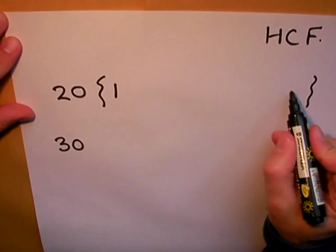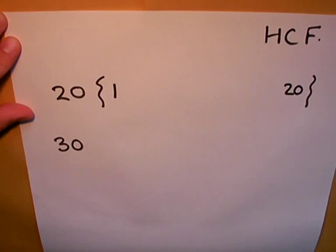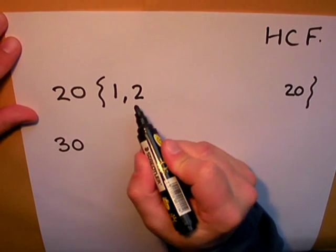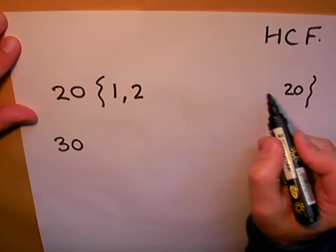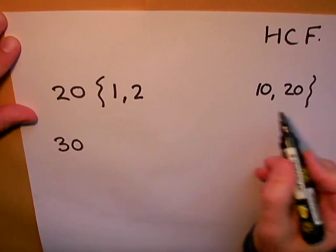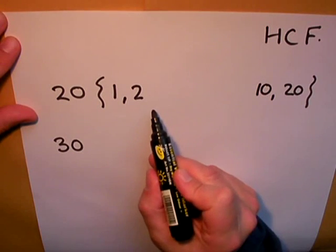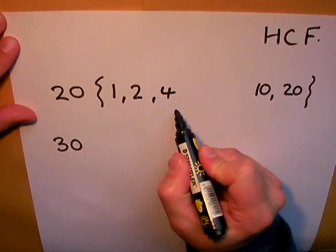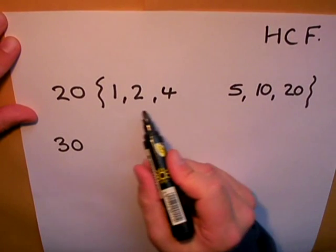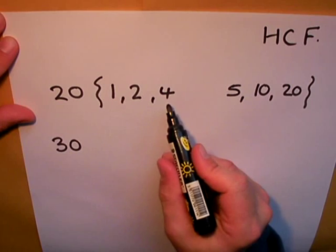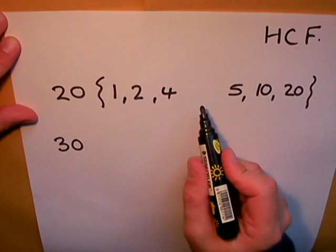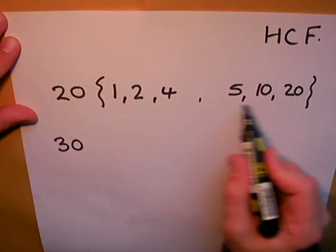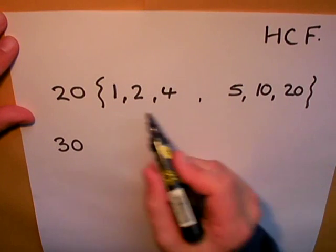I can start off with 1. 1 multiplied by 20 gives me 20, so they're both factors of 20. I know 2 goes into 20 ten times, so there are 2 more factors. 3 doesn't go into 20, but 4 does, so 4 multiplied by 5. You'll notice that because these numbers are getting larger and these are getting smaller, I've met myself in the middle. I've gone through all the possible factors of 20 and I've found 6 in that list.